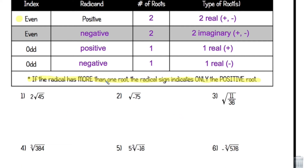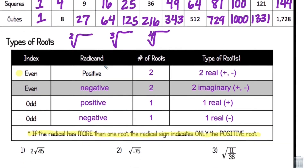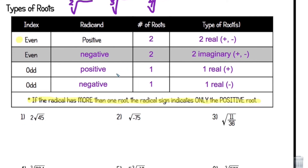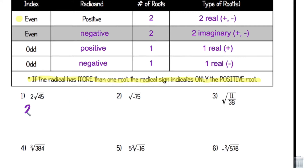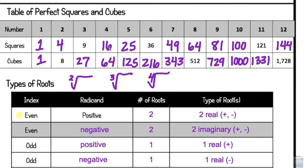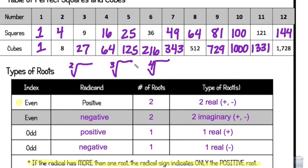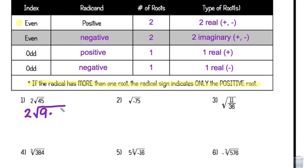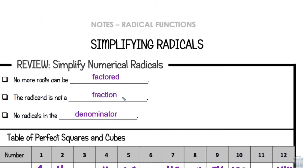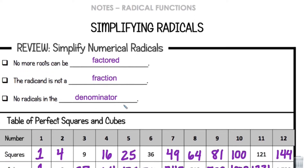Using this table, we can do some simplification. Let's look at number one. I have a 2 on the outside and I want to break down 45. It's a square root — there's no index. I'm looking for the largest perfect square that can go into 45, and that's going to be 9. So it's 9 times 5. The square root of 9 is 3, so I pull out a 3, and I'm left with a 5 in the radicand. That gives me 2 times 3, so my final answer is 6√5. Always double-check: no more factors, no fraction, no radical in the denominator.